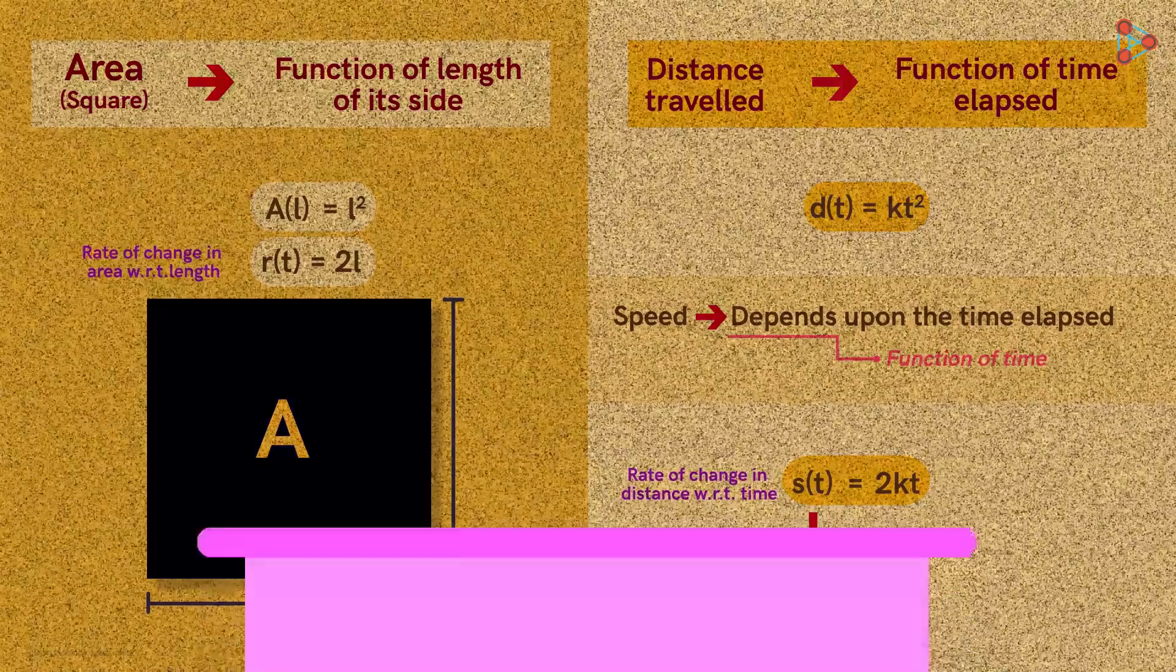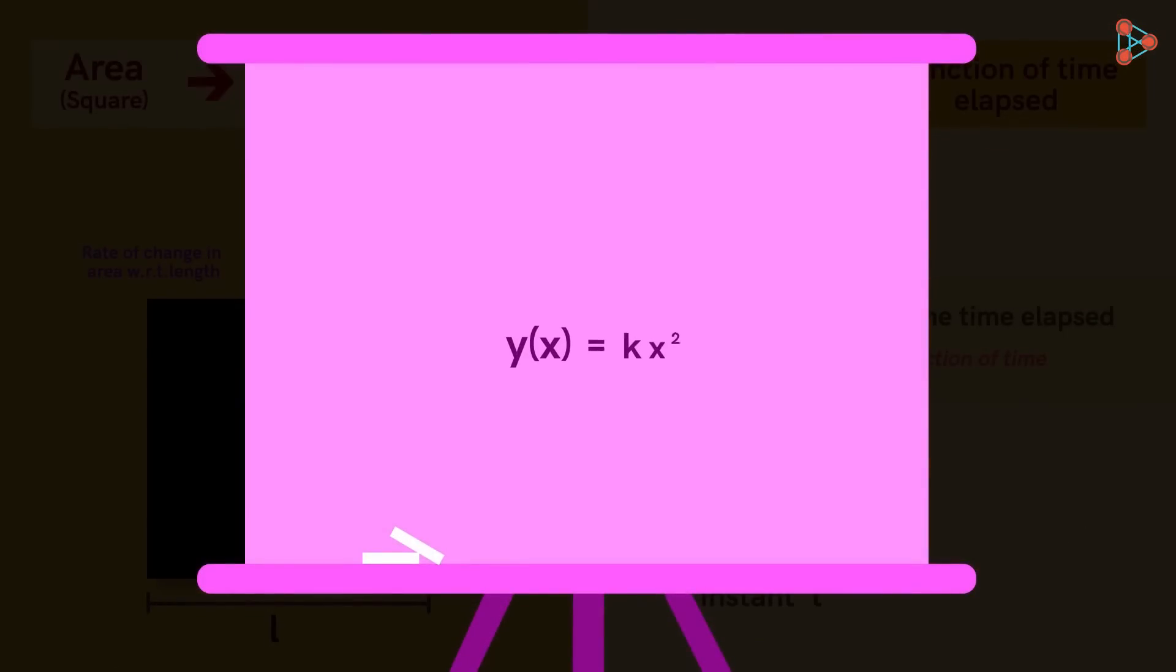That means, once we know that the function between two variables follows this relation, we instantly know the rate. This function tells the rate of the change of the dependent variable with respect to the independent variable.